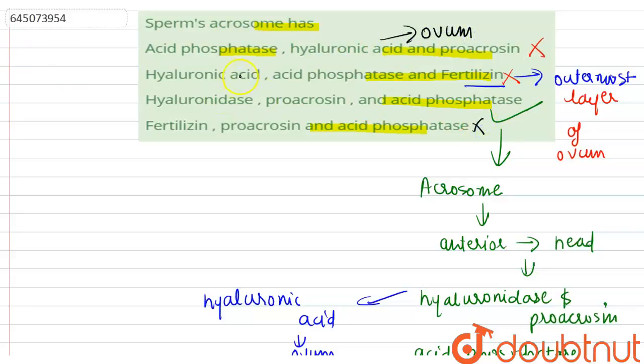So that is why the correct option here is hyaluronidase, pro-acrosin and acid phosphatase. Thank you.